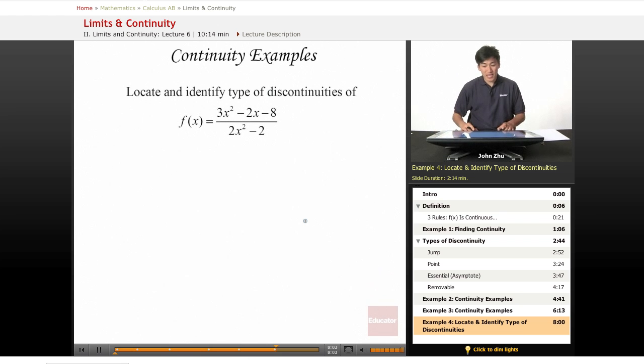All right, let's take a look at this following function. And what we want to do is locate and identify all the different types of discontinuities of this rational function, assuming that there are discontinuities.